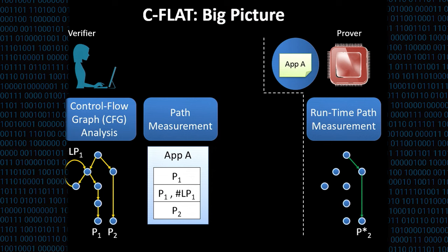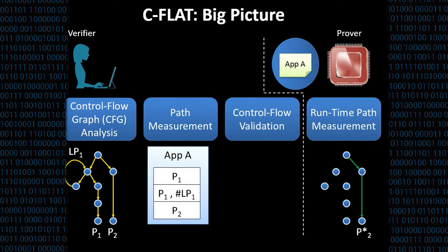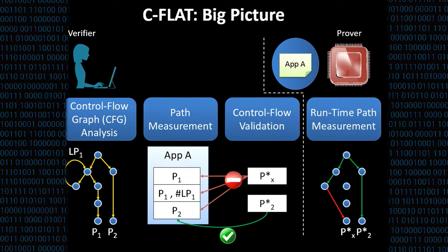And there we have a trusted component, here called runtime path measurement, that measures the path that is really taken by the prover. If a valid path is taken, like P2, then that path gets reported to the verifier and exactly matches the one that we have in the measurement database. However, if a control flow attack is launched by an attacker, here indicated by the red arrow, then a completely different path measurement is transmitted that does not match any of those paths that we have stored before.